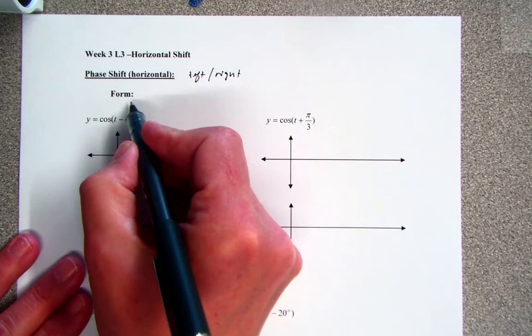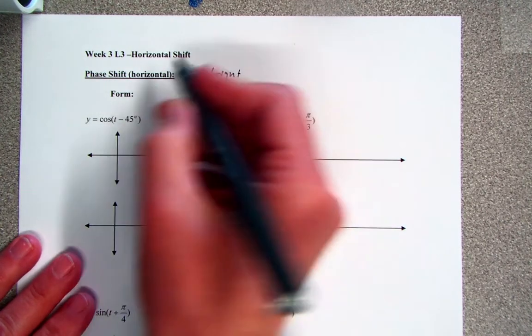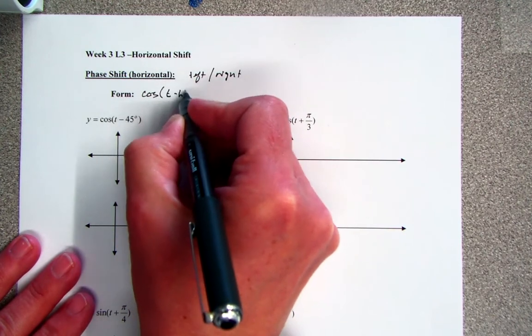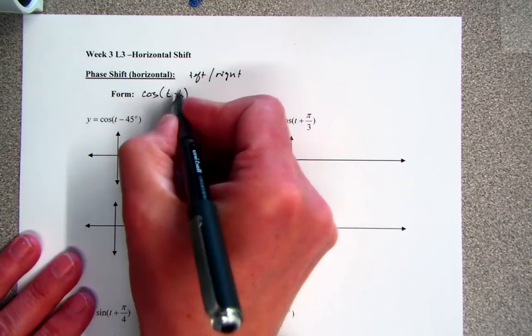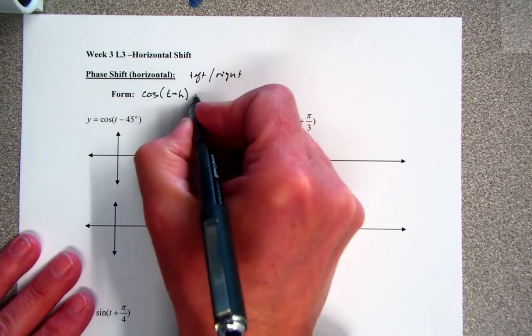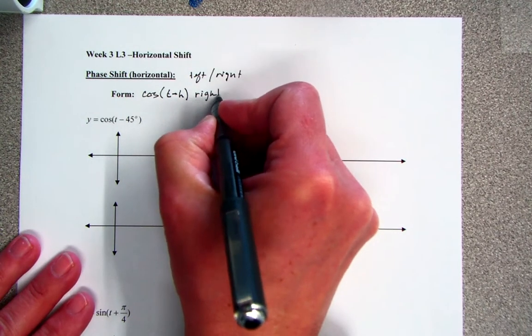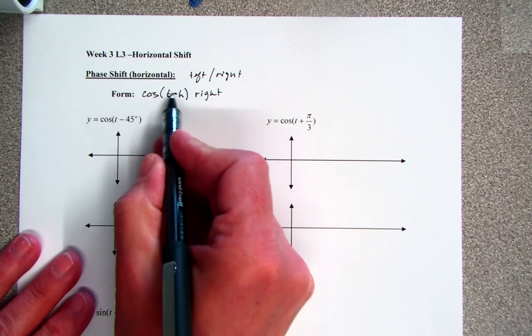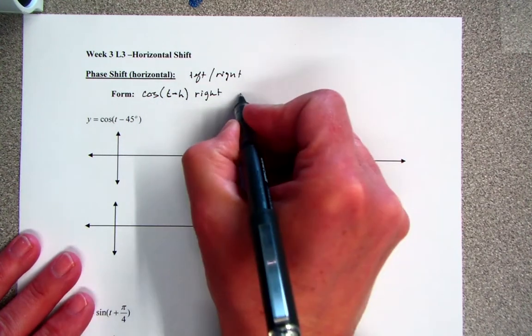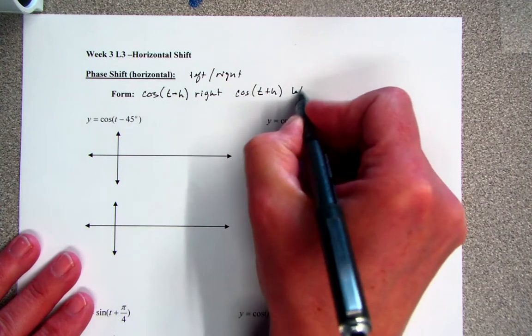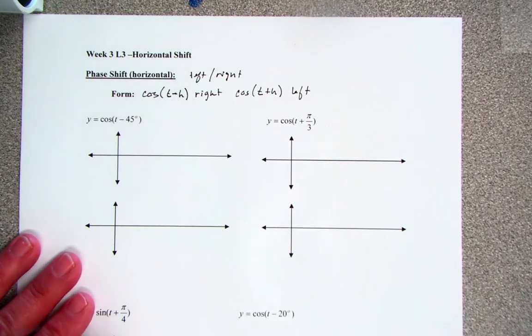So the form for that, where you have your value, is going to be cosine. And I'm just going to use the letter T. I could use any letter I want, but it's a letter inside. And a negative H inside will really, and this is not a mistake, it is going to pull it right. It's just the inverse of it because you're trying to make zero. So likewise, if I have the cosine of T plus H, this is really going to move it left, just kind of opposite of what you would imagine.